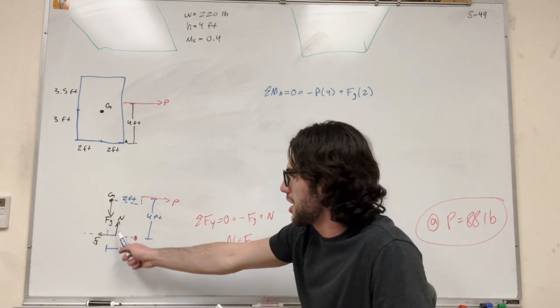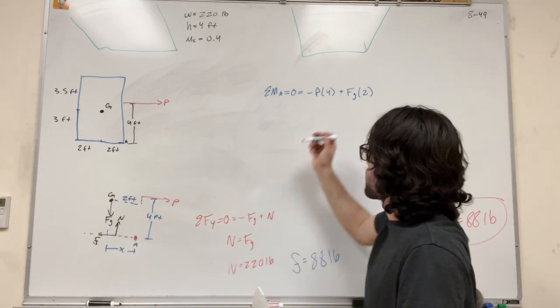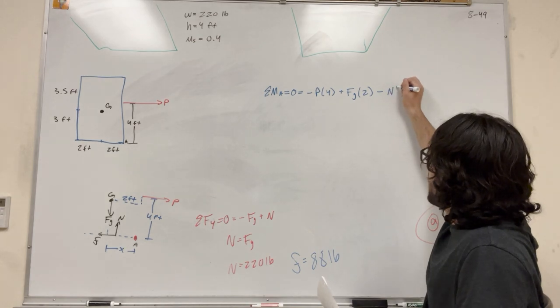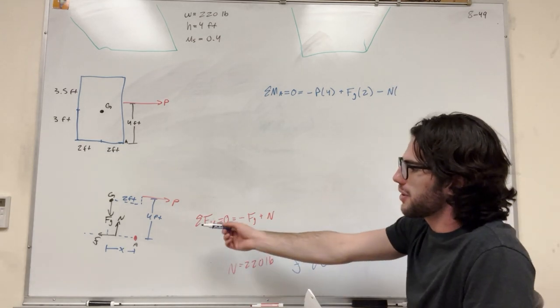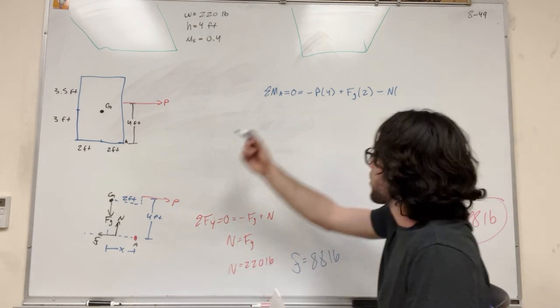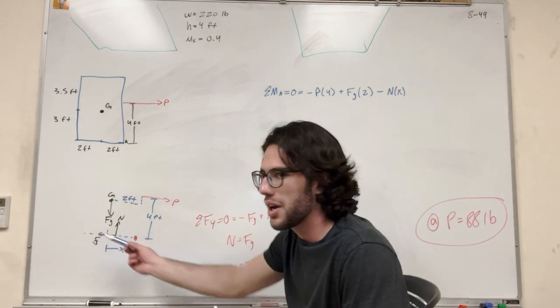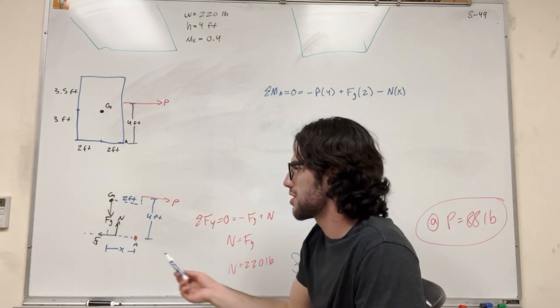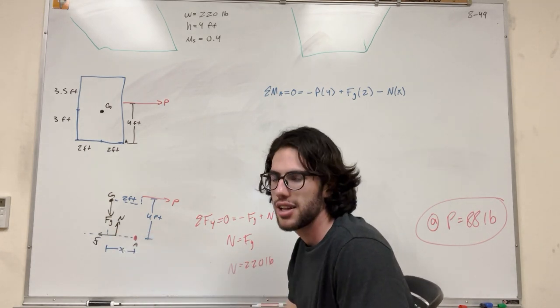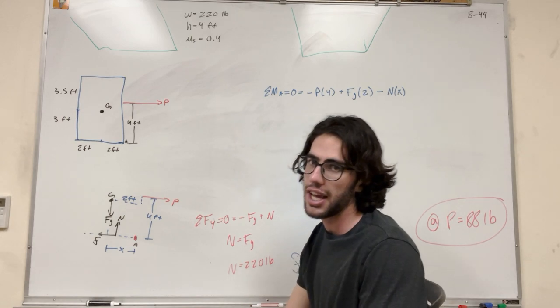And then all we have left is normal. So normal is pushing here. That's making it want to go clockwise. We're going to subtract normal. And then it's times its distance. So its distance is X. That's what we're solving for. X. So then, of course, we have some friction. So friction pulls from this way, which is not going to enact a moment around A, because it's pushing in the X direction, and its only distance is in the X direction.